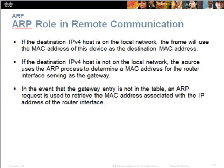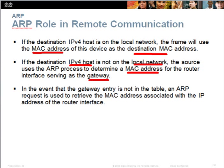ARP is also used in remote communication. When the destination IPv4 host is on the local network, the frame uses that device's MAC address as the destination. However, if the host is on another network, the source uses the ARP process to find the MAC address of the router. If the gateway entry is not in the table, an ARP request is made to find the MAC address of the gateway router.